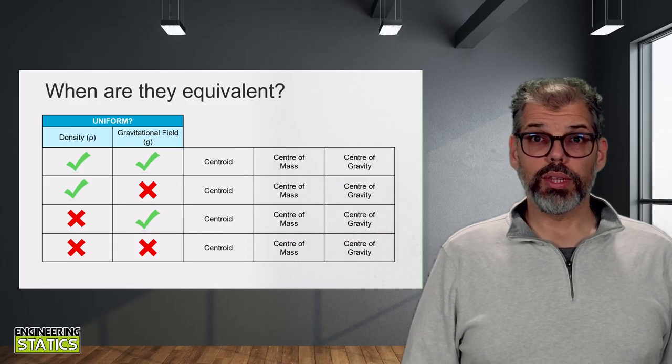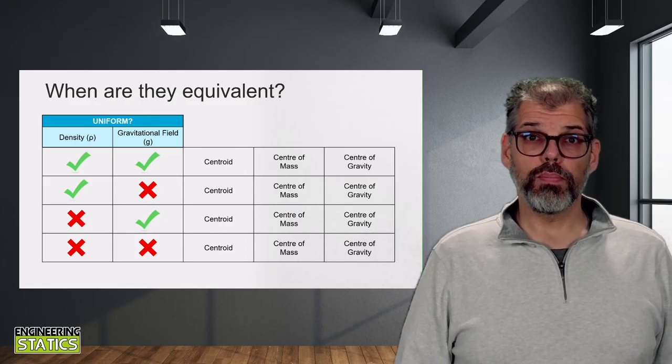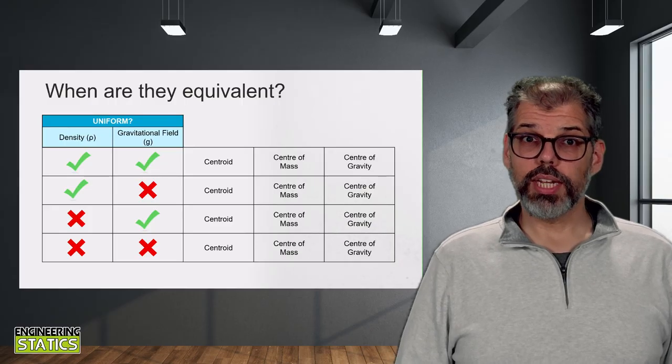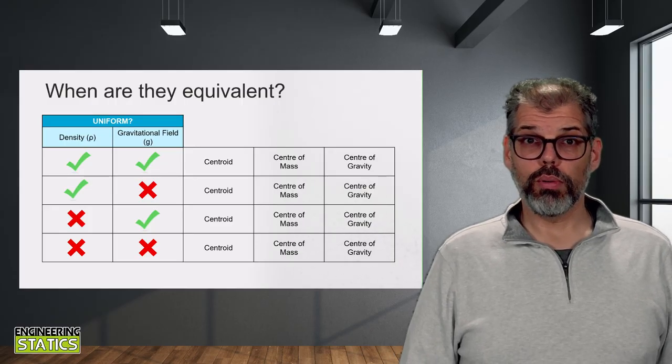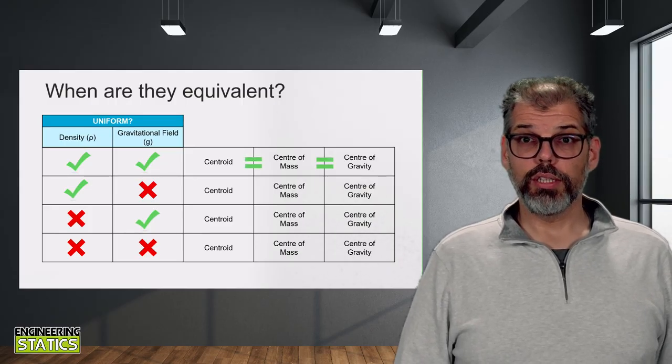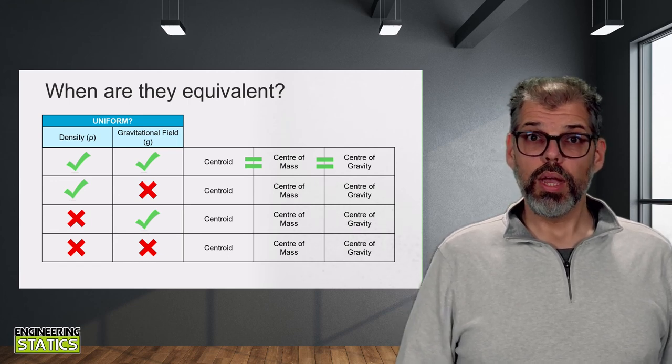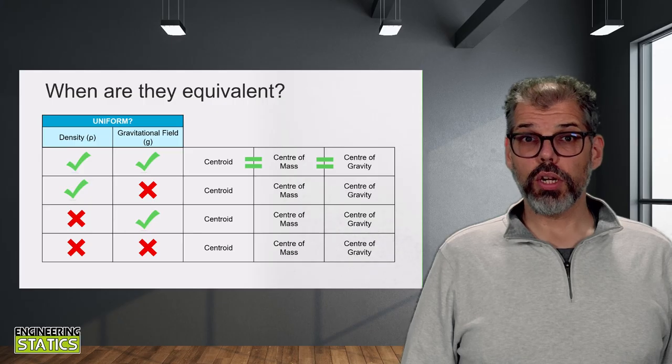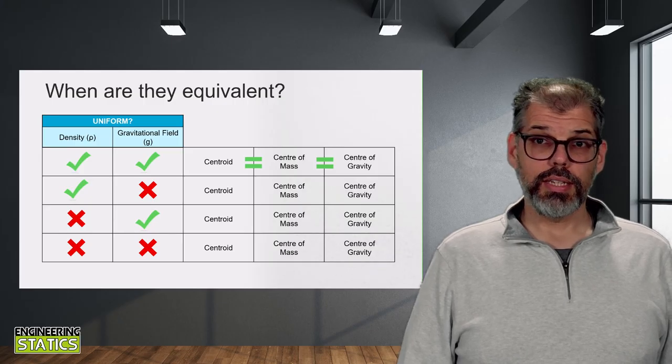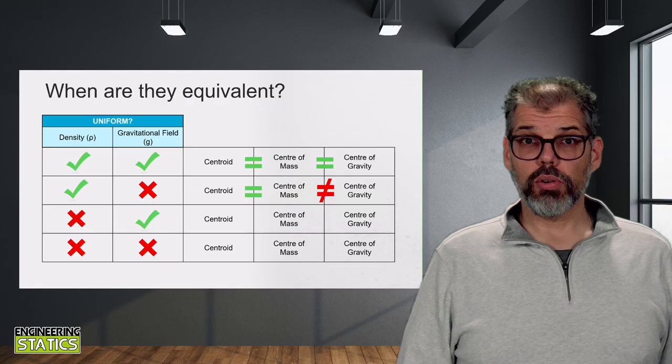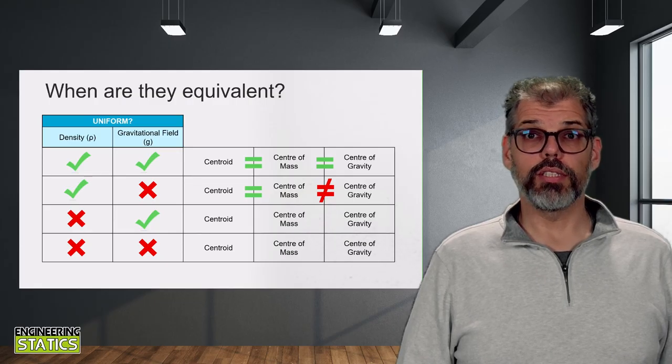To help us with this, we can look at the following table. When the density and gravitational fields can be approximated as being uniform, then the centroid, center of mass, and center of gravity are equivalent. If the gravitational field is not constant but the density is, then the centroid and center of mass are equivalent but the center of gravity is not. Conversely, if the density is not uniform and the gravitational field is, then the center of mass and center of gravity are equivalent but the centroid is not.